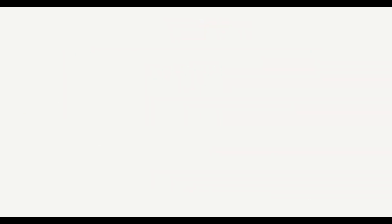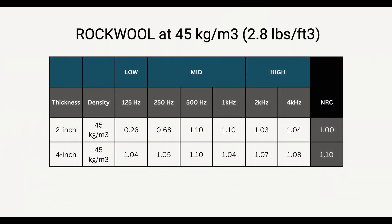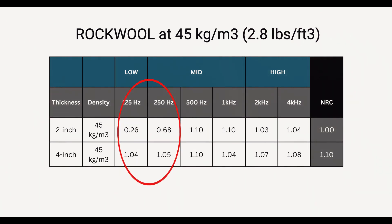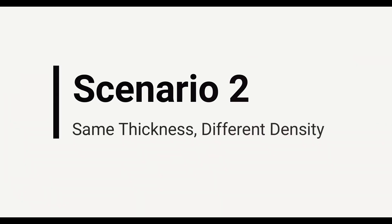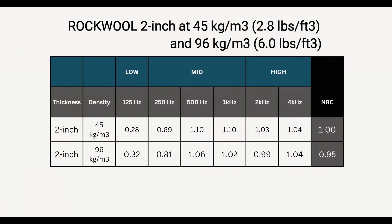We'll be looking at two scenarios. The first is same density, different thickness. Taking rockwool insulation as an example — suppose you have rockwool with a density of 45 kilograms per meter cubed. The absorption rates will differ at certain frequencies as the thickness varies. Rockwool at 2 inches will have lesser absorption rates at low-end frequencies compared to the same rockwool at 4 inches. The second scenario is same thickness, different density: a 2-inch material at 45 kg/m³ will perform differently than at 96 kg/m³.